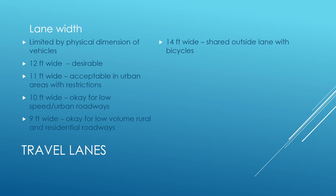Twelve feet wide is typically desirable. Roads around this area often have 12-foot lanes, though they're going wider due to increased bicycle traffic. It's relatively lower cost to add that extra two feet for a bicycle lane rather than making a separate path or adding a sidewalk for bicycle traffic.